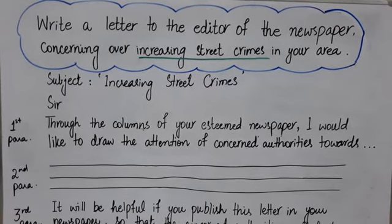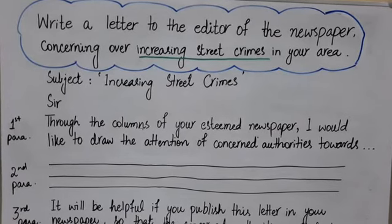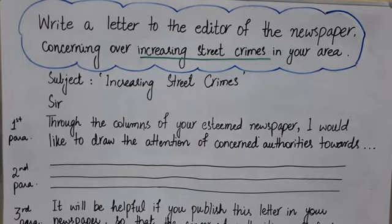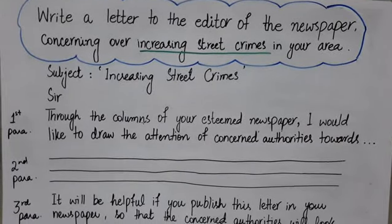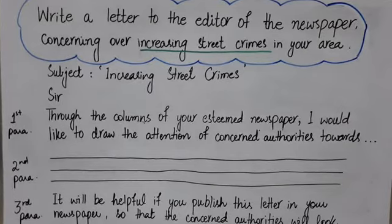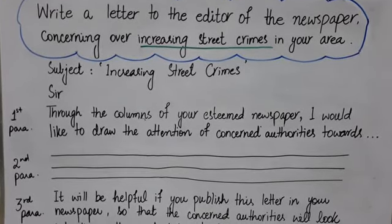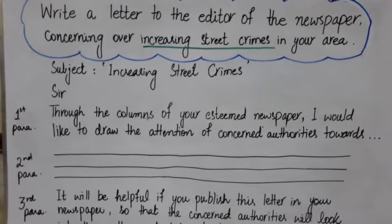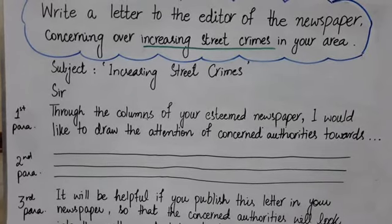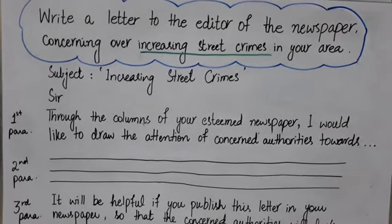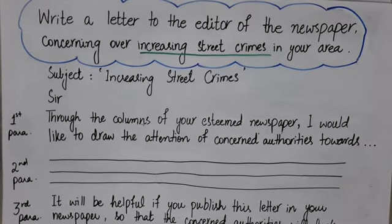As we know, most parts of the letter are the same — for example, we write 'Examination Hall, City ABC,' then the date, then after leaving a space, 'The Editor,' the name of the newspaper like 'The Daily Dawn,' then the name of the city. Then comes the subject — we just find the topic from the question and write it. Here, 'increasing street crimes' is underlined, so the subject is 'Increasing Street Crimes.'